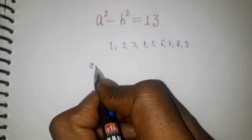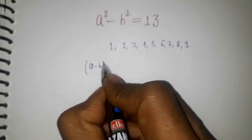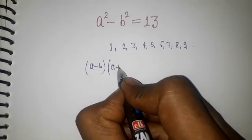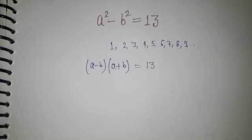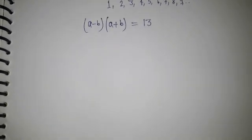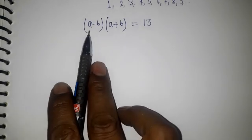So what I'm going to do: a² - b² can be written as (a - b)(a + b) = 13. Now your magic starts from here, a - b...